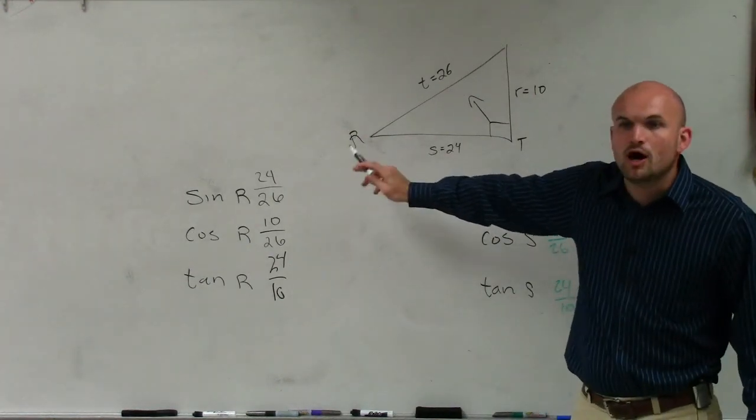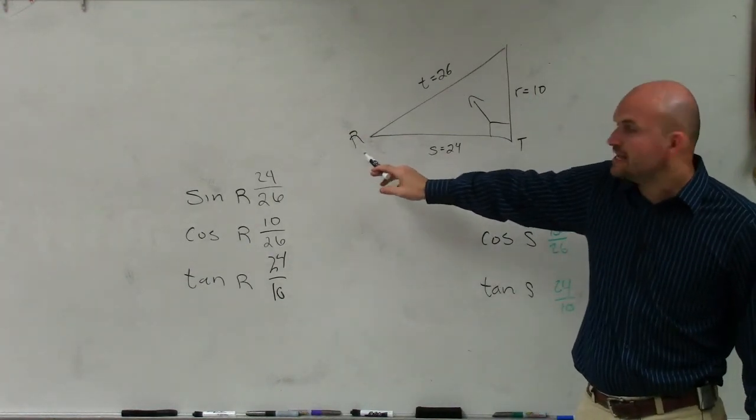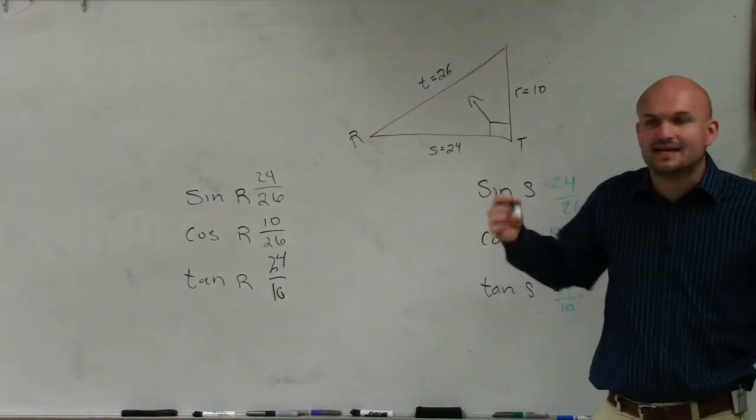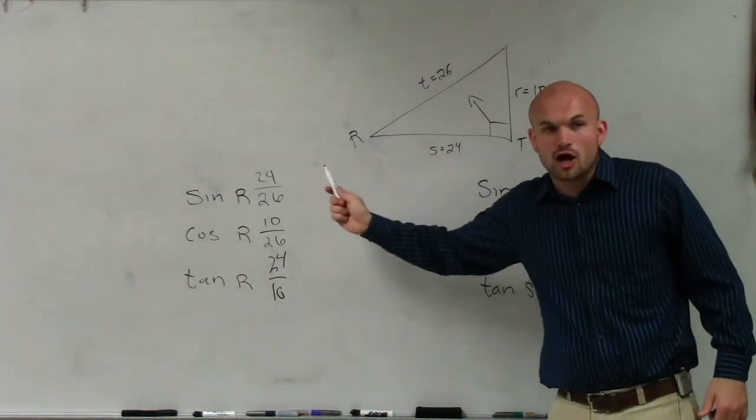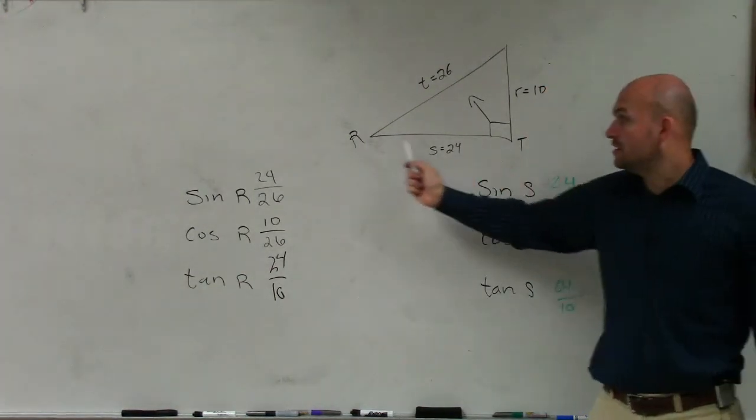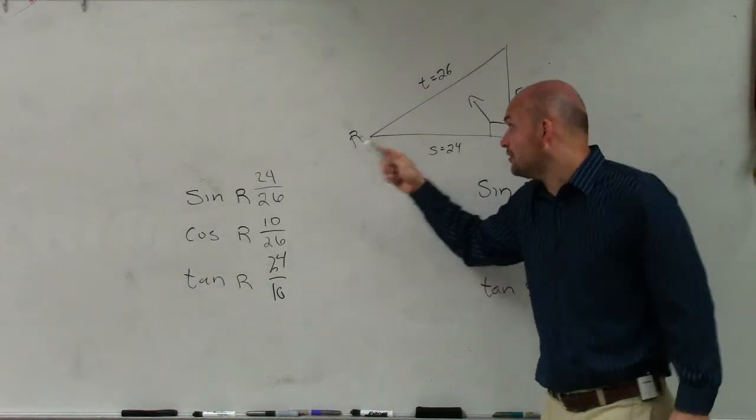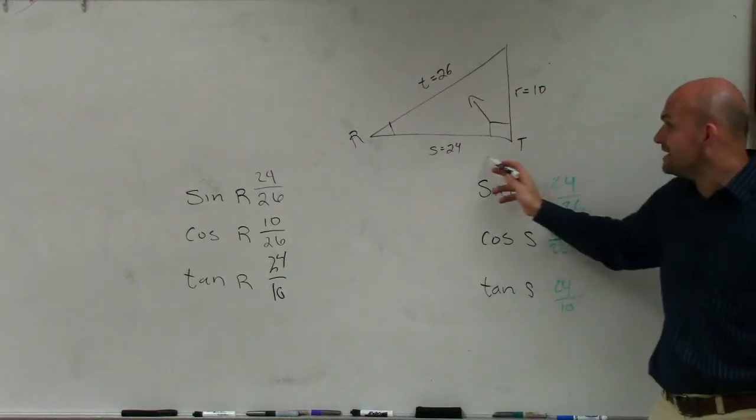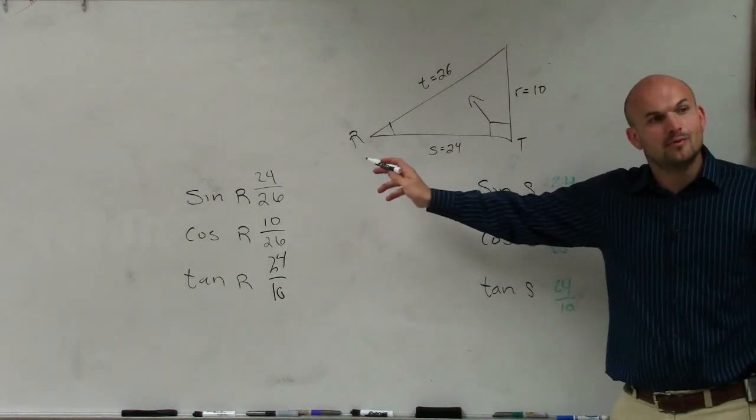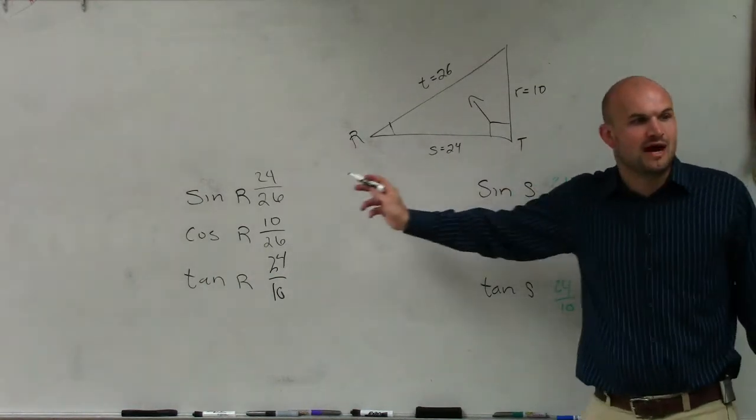At r, what we're all concerned about, Jared, is what is the side length that connects my angle r to the right angle? What side length connects my angle r to the right angle? That is 24, right? And we call that side length adjacent or opposite, Tommy? Which one do you think it is?